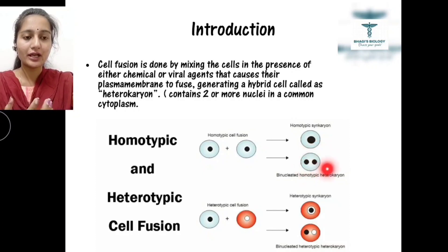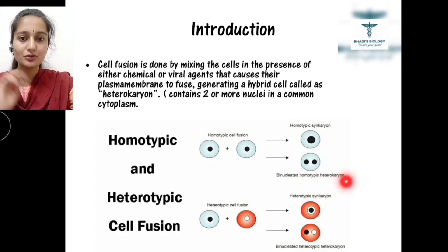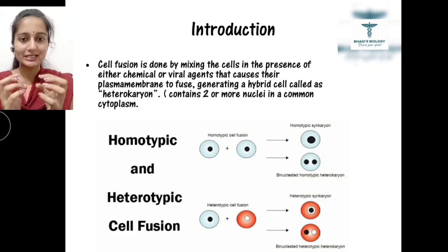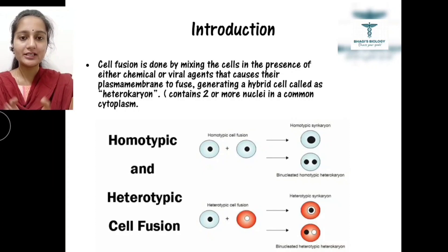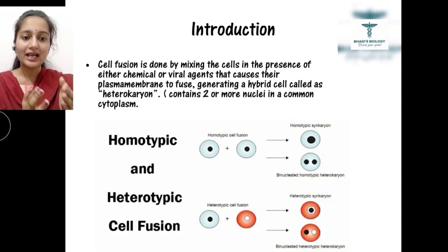There is another condition where you can observe a cell with two nuclei — this is called a binucleated homotypic heterocaryon, where the two nuclei belong to the same cell type but remain separate. This type of cell fusion comes under homotypic cell fusion.